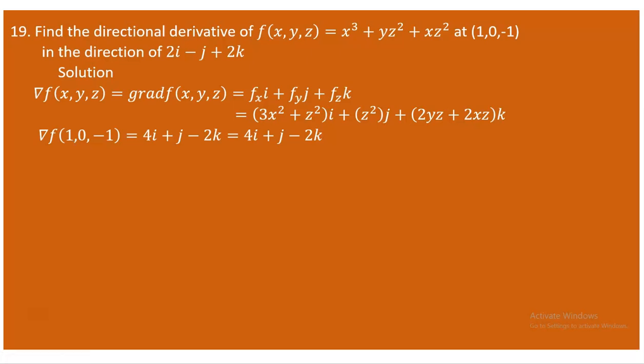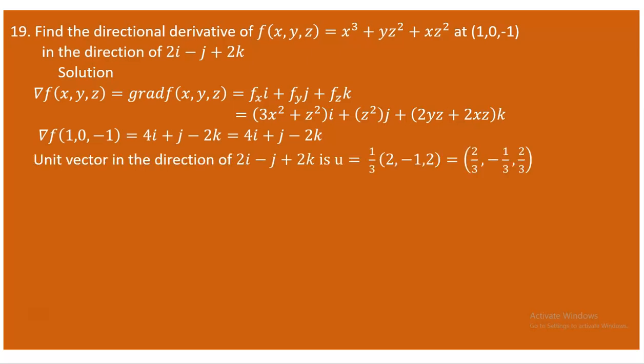Now we substitute the coordinates of the point (1, 0, -1) in place of x, y, z. After substitution, we get 4i + j - 2k: x is 1 so 3 comes, z is -1 so squaring gives 1, and 3 + 1 = 4 for the i component; z² = 1 gives j; and with y = 0, we get 0 + (-2) = -2k. Therefore, the gradient of the function at (1, 0, -1) is 4i + j - 2k.